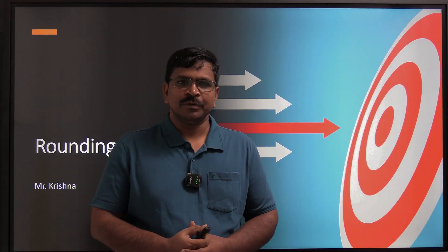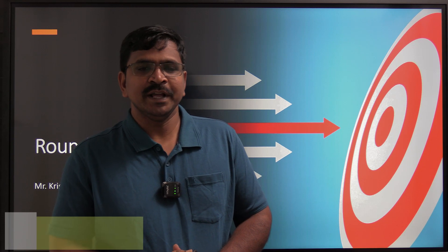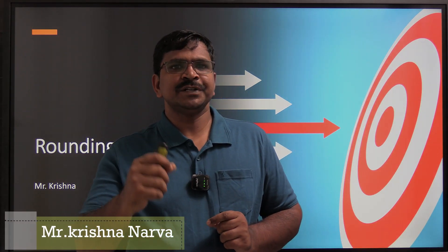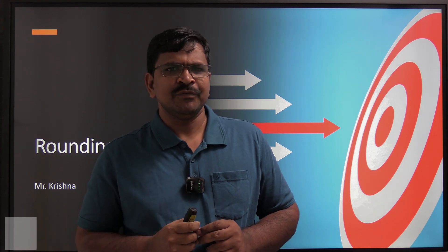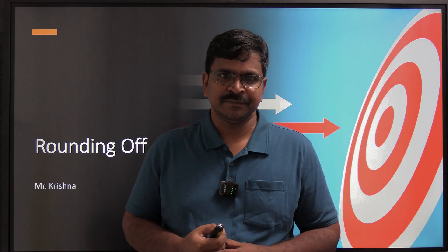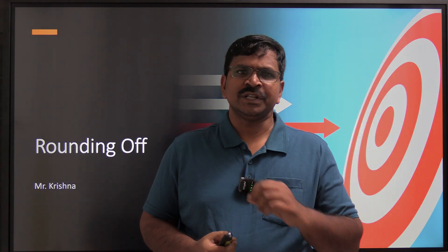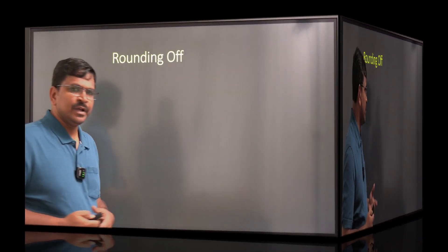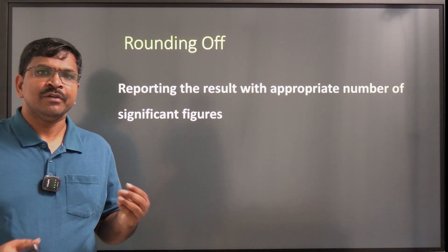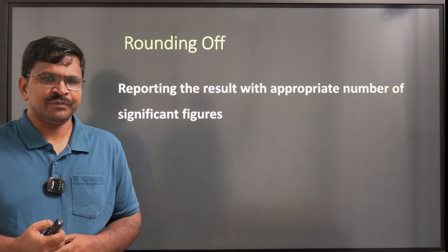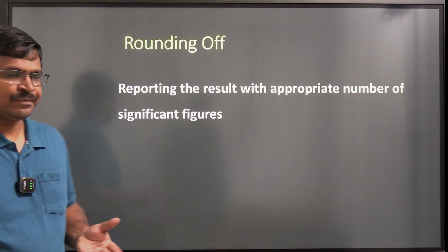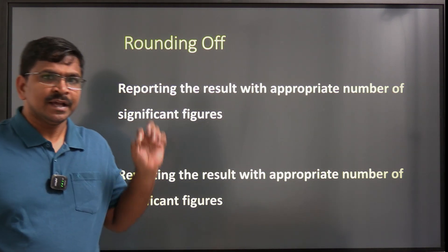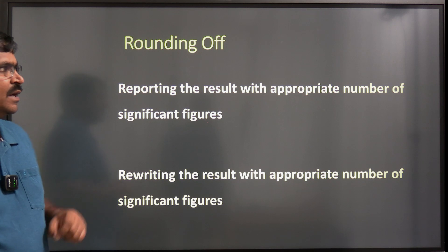Dear students, let us discuss rounding off techniques. Whenever we deal with certain operations of measurements which involve different uncertainties, we apply rounding off. Rounding off means reporting the result with the appropriate number of significant figures, or in other words, rewriting the given result with the appropriate number of significant figures.